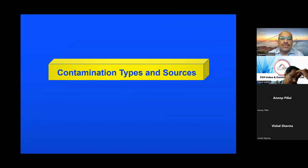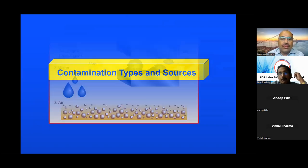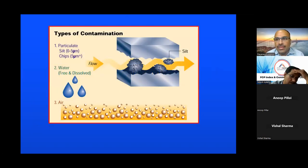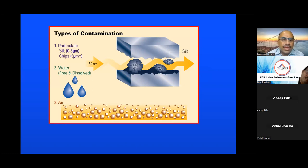Now we can talk about types and sources. Every filtration application has a different problem. For hydraulic oil, we will talk about particulate contamination - that's the number one problem in hydraulic oil. Number two is water, which is available as free and dissolved water. Air is also a contamination we can discuss.